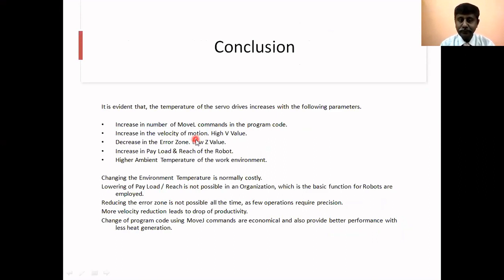It's a very good method. You can reduce the temperature by various methods. One way of doing is you can reduce the payload, that is the load that the robot is carrying, but it will not be applicable because the robots are done for that and it has to carry that load. You can reduce the error zone. The Z0 means it will move exactly. Reducing the error zone will increase the temperature actually, and all the time increasing of error zone is not possible because it has to move to the exact point or it will drop the component somewhere else.